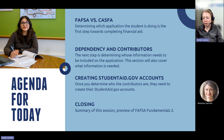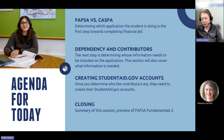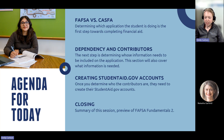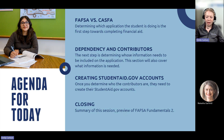Today we will be talking about the steps leading up to actually completing the application. First we'll be determining how to help a student figure out if they're doing FAFSA or CASFA. Then we will talk about dependency and determining the contributors — figuring out whose information needs to be included on the application. We'll also cover what information is going to be needed. From there, we'll talk about creating studentaid.gov accounts, which are needed to complete and sign the FAFSA. And then in closing, we'll give a summary of this session and preview the next session.